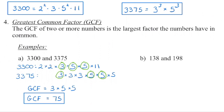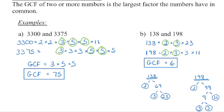The greatest common factor is the largest number that will divide evenly into two or more numbers. If we take the two numbers we just factored — 3,300 and 3,375 — and look at their prime factors, we can see they both have one 3, one 5, and a second 5. Those are the only factors they have in common. Multiplying those together: 3 times 5 is 15, times 5, gives us a greatest common factor of 75. If you're ever struggling to find the GCF, break each number into its prime factorization and look for the factors they have in common.